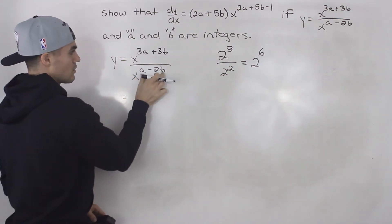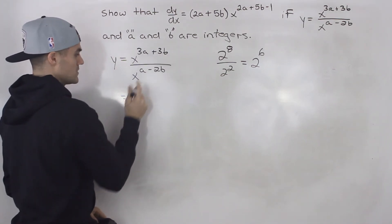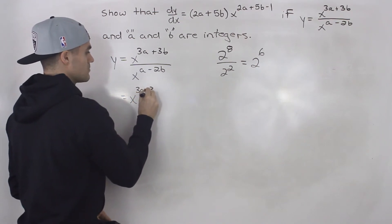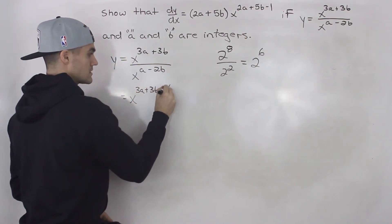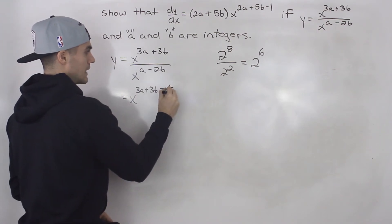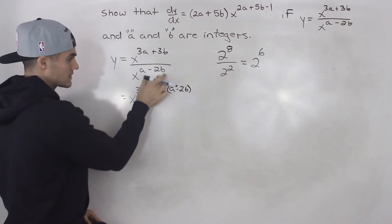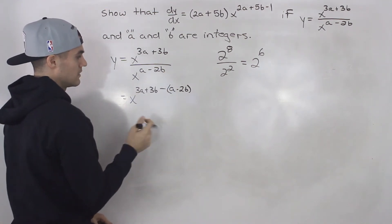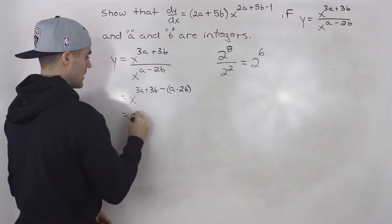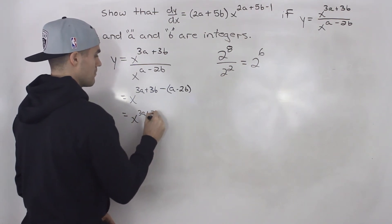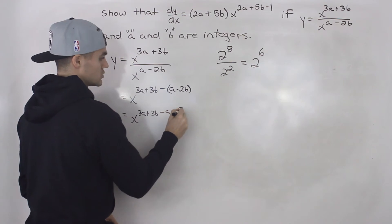We can just take this exponent and subtract it from this one. So we'd have x^(3a + 3b - (a - 2b)). Now you got to make sure that you put this whole expression in brackets because we're subtracting that whole expression.